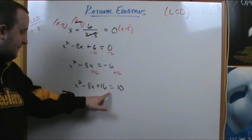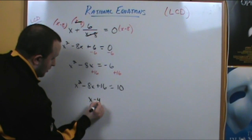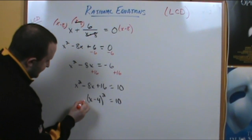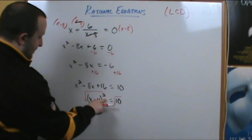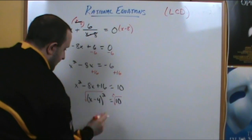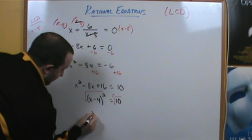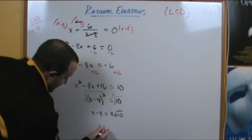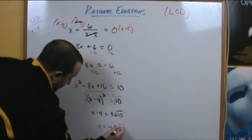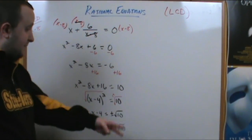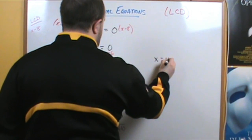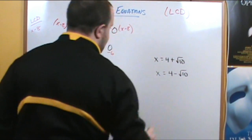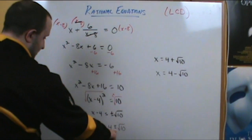We made a perfect square trinomial, so we can factor it as such, and then solve by taking square roots of both sides to eliminate the power of 2. When you introduce a square root, you include the plus or minus sign. On the left, we're left with x minus 4 equals plus or minus the square root of 10. Adding 4 to both sides gives us x equals 4 plus or minus the square root of 10. This plus or minus means there are two solutions, but we consolidate using the plus or minus notation.